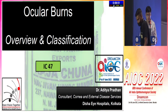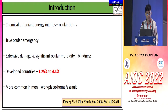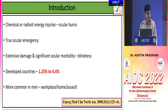My topic is providing an overview and classification of the different spectrum of ocular burns. Chemical or radiant energy injuries to the ocular surface constitute what we commonly call ocular burns. It is a true ocular emergency that can cause extensive damage and significant morbidity leading to blindness long-term. In developed countries, statistics show around 1.25% to 4.4% of the total burden of blindness. It is more commonly seen in men, either in their workplace or homes, and sometimes it can be a result of assault or vitriolage, which has medico-legal implications.